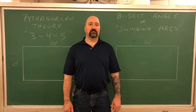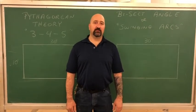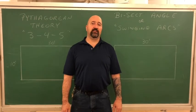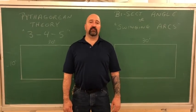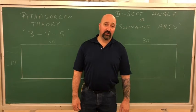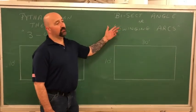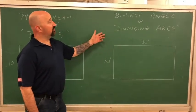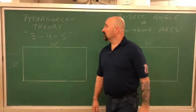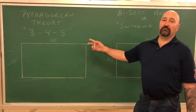Good morning everybody. I'm Andrew Irenzi and today's lesson we're going to be talking about two different methods of squaring a room for a tile layout. One of the ways of doing it is the bisecting angle or the swing and arcs method. The other way we're going to talk about is the Pythagorean Theorem or the 3-4-5.